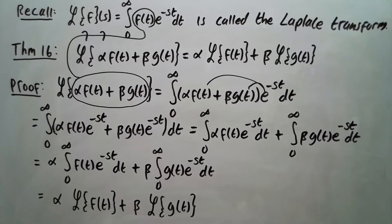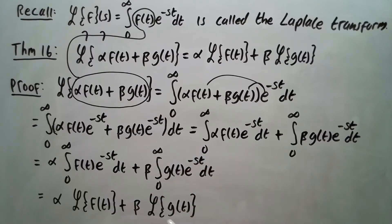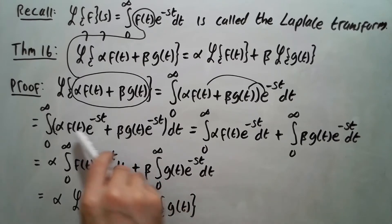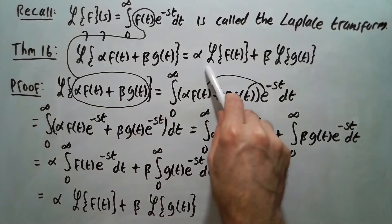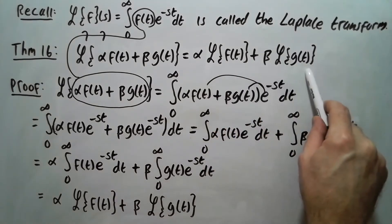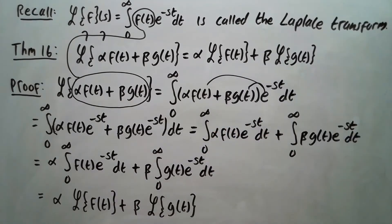We get alpha times Laplace of f plus beta times Laplace of g. That's Laplace of g by definition, and that's Laplace of f by definition, with alpha in front of the first and beta in front of the second. And that's exactly what we were trying to show, so we're done with the proof.